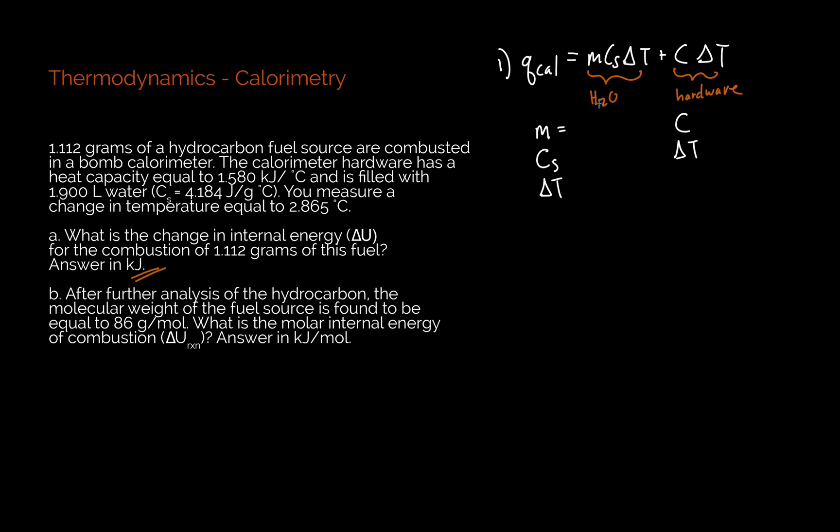I know I have 1.900 liters of water. I know there's 1 gram of water per milliliter, so I can really read that volume as 1,900 grams of water. My heat capacity is given, but I want this in units of kilojoules. So I'm going to write this as 4.184 times 10 to the negative 3 kilojoules per gram degrees C. Then my change in temperature is given as 2.865 degrees C.